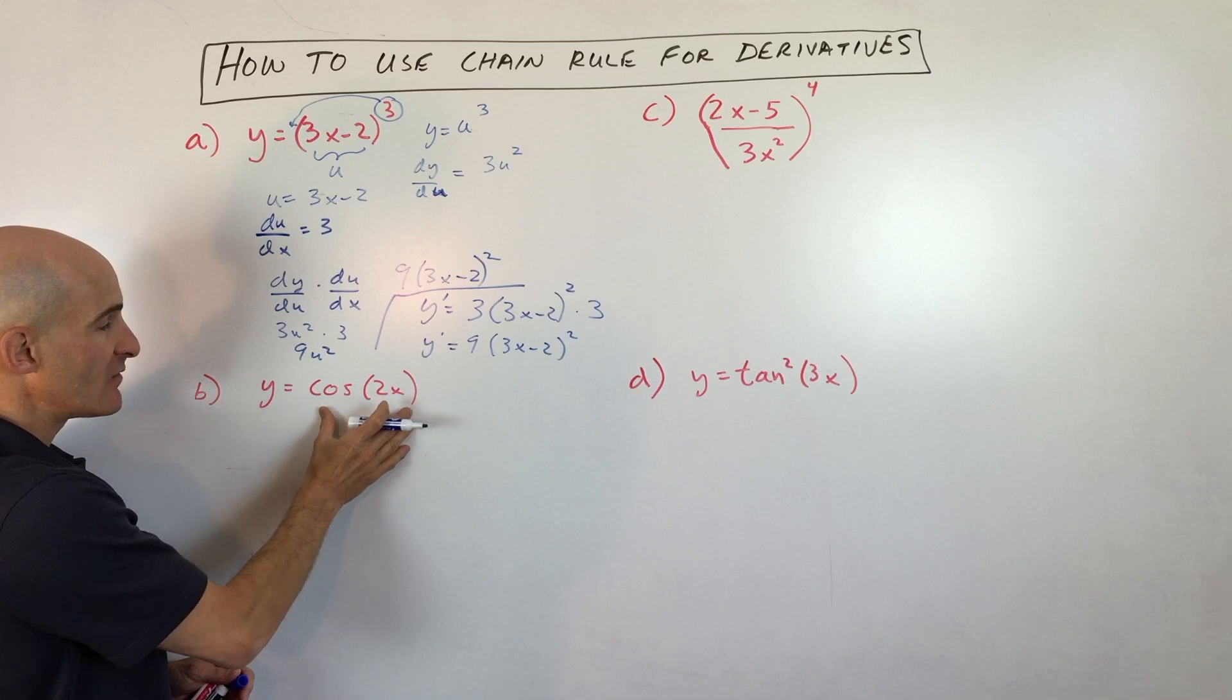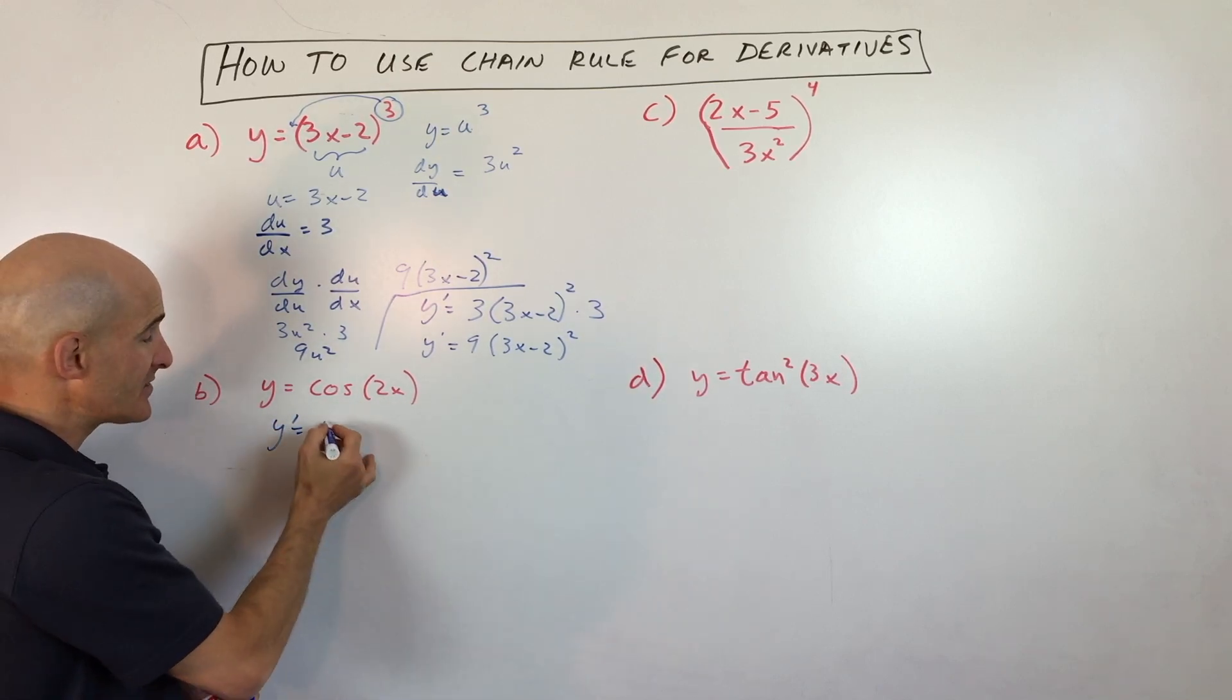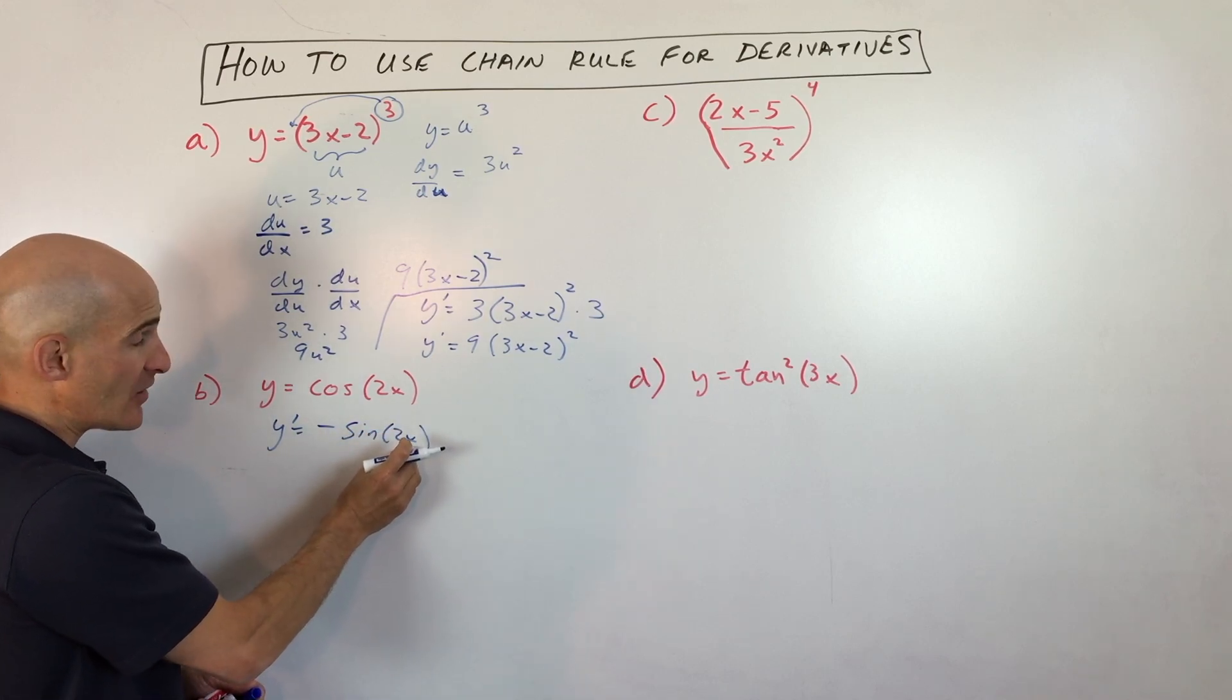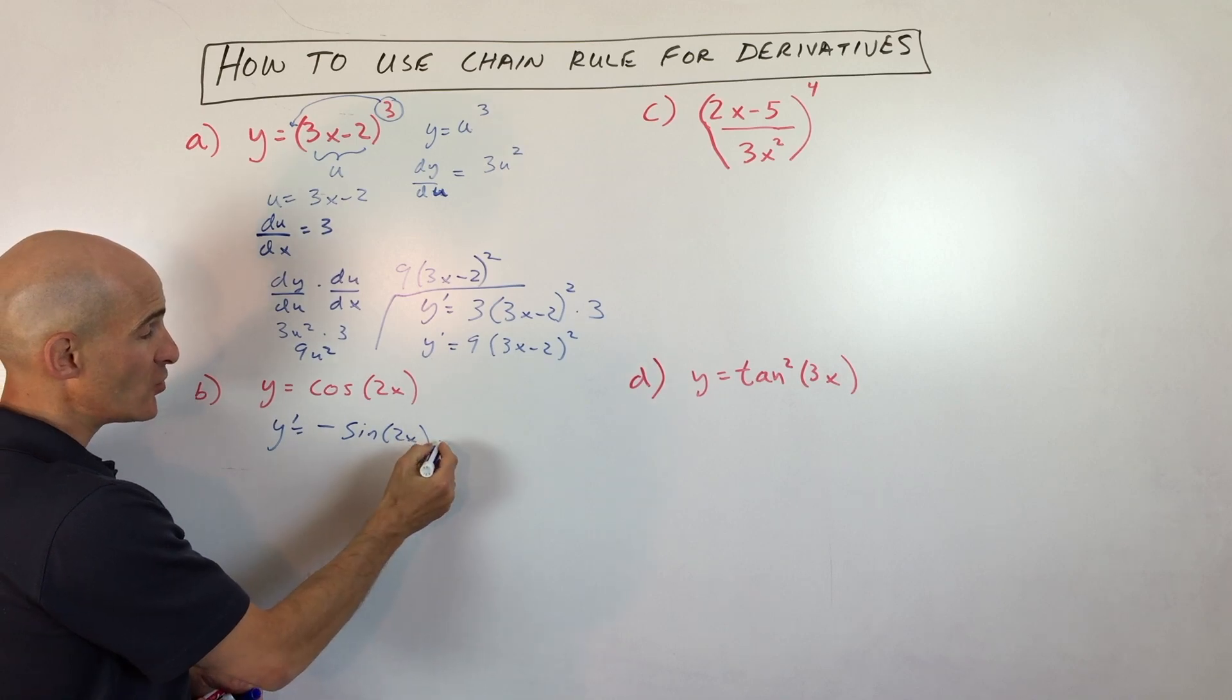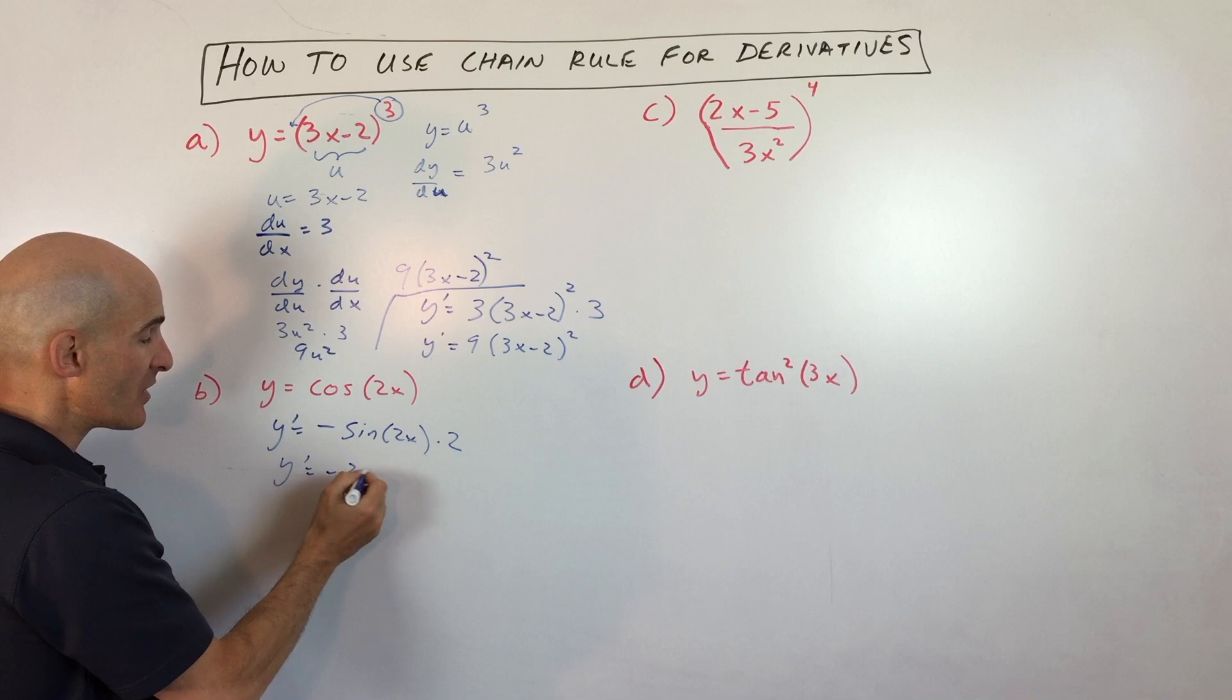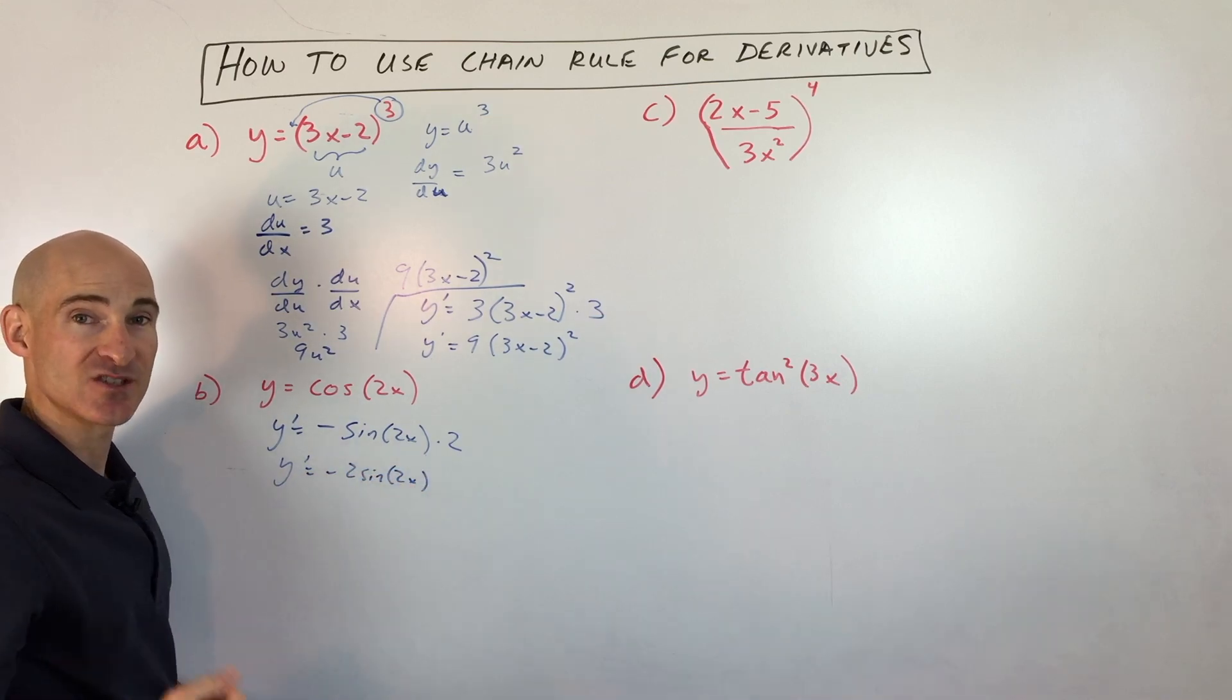In this one you can see we've got cosine, and we know that the derivative of cosine is negative sine. We have to take the derivative of the inside now. So derivative of 2x is just 2. So times 2. We could just rewrite this: negative 2 sine(2x).